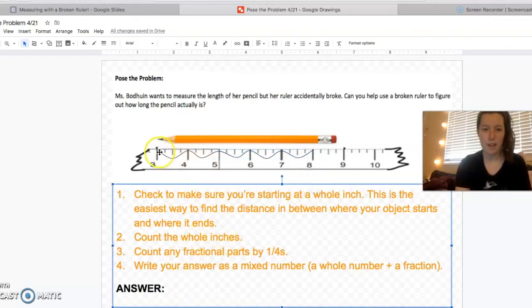Let me turn my curve tool off here so that we don't keep drawing curvy lines. Okay. So now that I've counted the whole inches, one, two, three, four, five, I'm going to put that in my answer. I know that's going to be part of my answer. Now I have to count fractional parts by fourths. What does that mean? Fractional parts by fourths. Oh, that's like yesterday when we were talking about how each inch on the ruler is divided into four equal parts. So we have to count by our unit fraction, which is fourths. Let me turn my curve tool back on here so that we can do some more jumping.